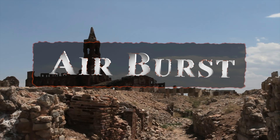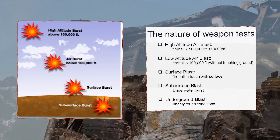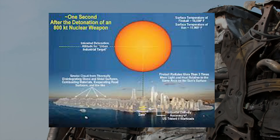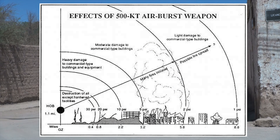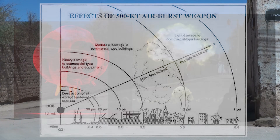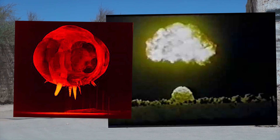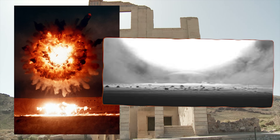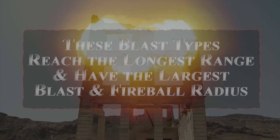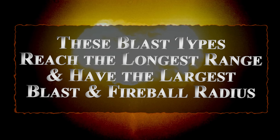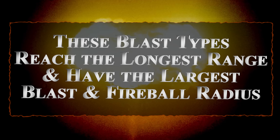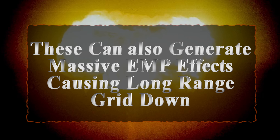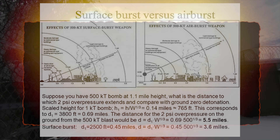The different types of nuclear explosions. An air burst is defined as one in which the explosion occurs in the air at an altitude below 100,000 feet, and one of the classifying factors is that the fireball does not touch the surface of the Earth. A detonation above that altitude of 100,000 feet is generally denoted as a high-altitude burst. Air burst and high-altitude burst are designed to give the maximum range for the fireball and blast radius. These are also used to generate massive EMP effects and long-range devastation. The fallout will be negligible.